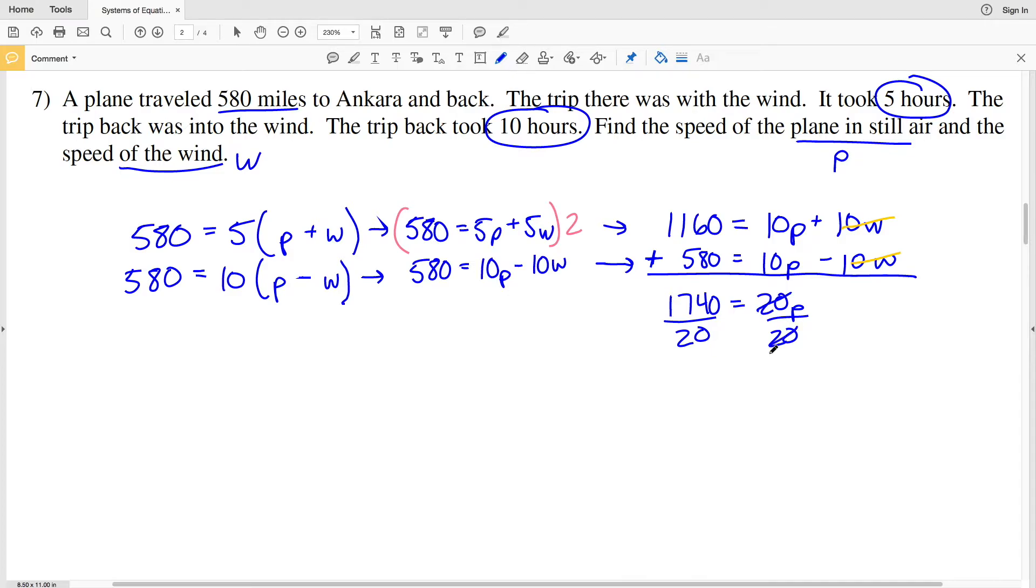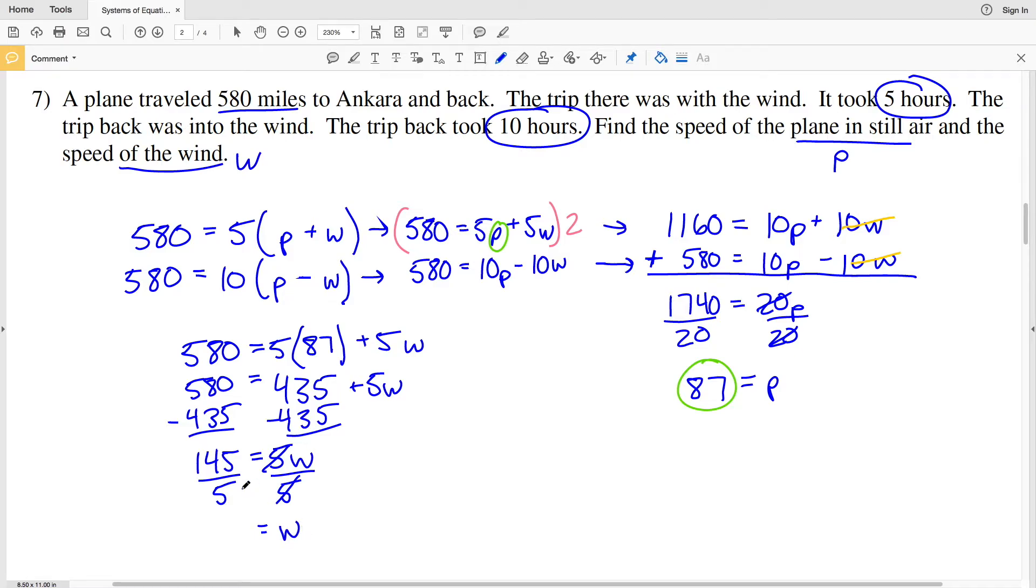So when I divide both sides by 20, I'll get that the speed of the plane P is equal to 1740 divided by 20, which is 87. And now that I have the speed of the plane, I'll plug 87, which is equivalent to P, in for either of my equations. Let's plug it into this first equation after we had distributed that 5. So we'll have 580 equal to 5 times 87 plus 5 times W. So that's 580 equal to 5 times 87, which is 435, plus 5W. So subtracting 435 from both sides, we will get 145 equal to 5 times the wind speed, and dividing 145 by 5 will give us our wind speed W of 29.